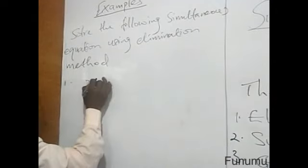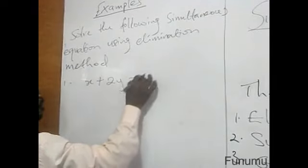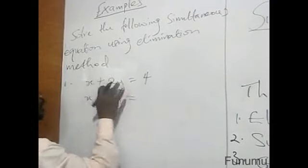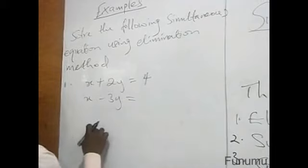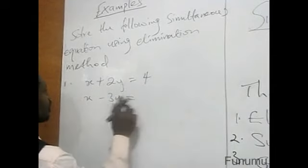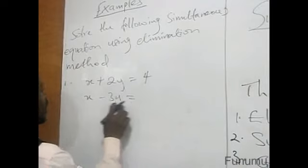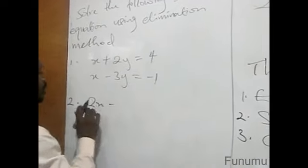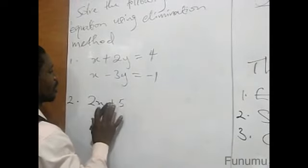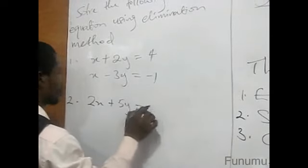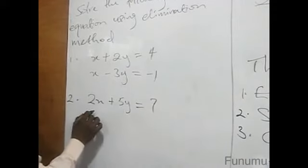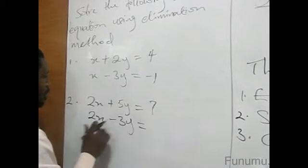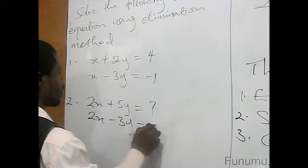Question one: x plus 2y equals 4, and x minus 3y equals negative 1. Question two: 2x plus 5y equals 7, and 2x minus 3y equals negative 1.